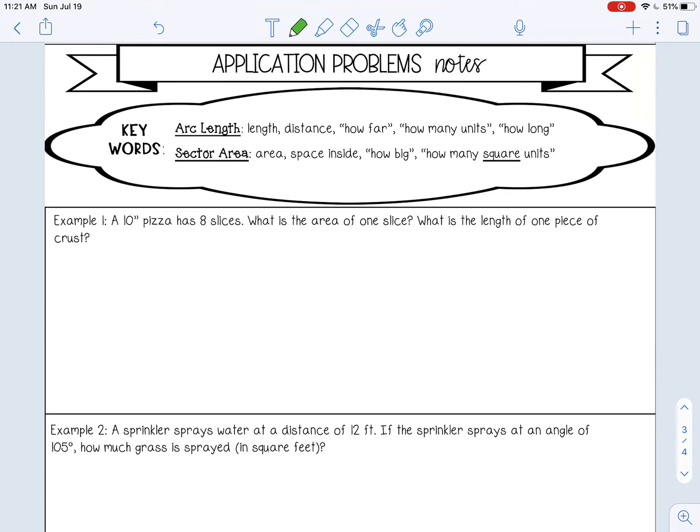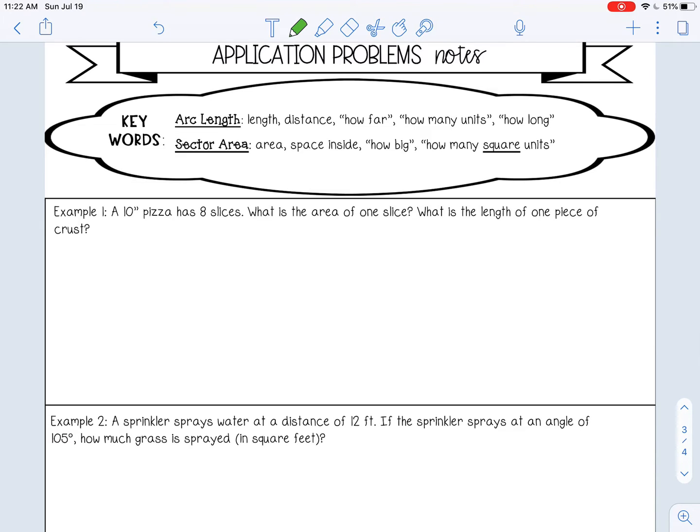A few keywords that you're going to see in application problems. For arc length, you'll see length, distance, how far, how many units, or how long. For sector area, you'll see area, space inside, how big, how many square units. So example number one: a 10-inch pizza has eight slices. What is the area of one slice and what is the length of one piece of crust?